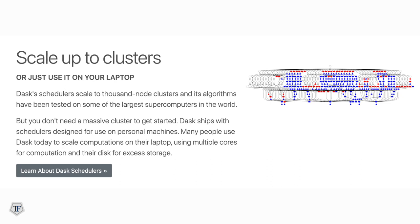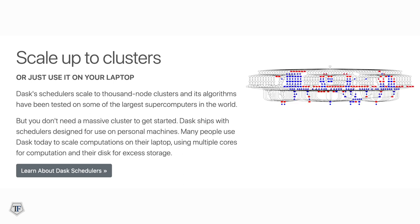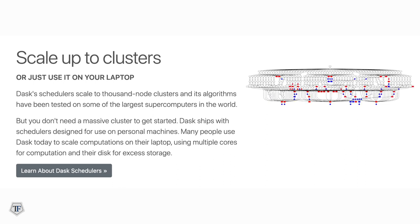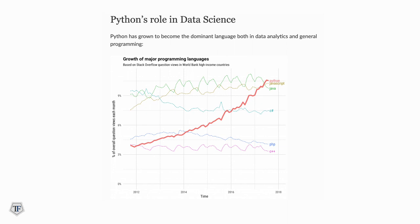I'm really excited to show you Dask. The Dask scheduler scales to 2,000-node clusters and has been tested on some of the largest supercomputers in the world — but you don't need a massive cluster to get started. Dask ships with a scheduler designed for personal machines, and many people use Dask to scale computations on their laptop using multiple cores for computation and disk for storage. It's built natively within the Python ecosystem.